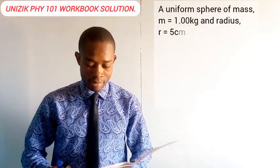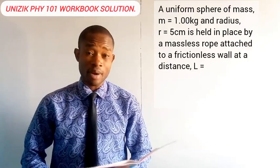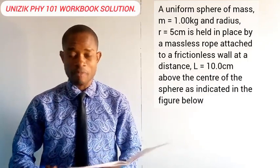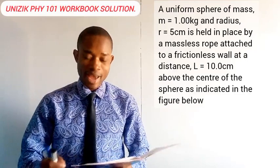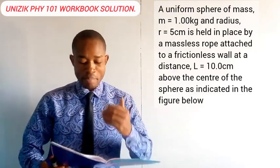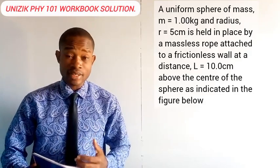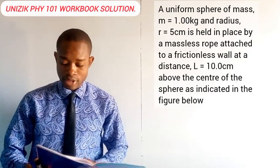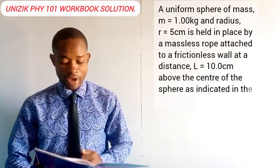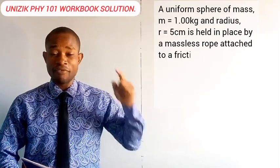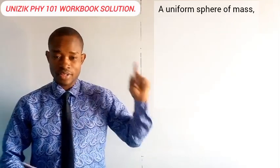Question number 3. A uniform sphere of mass m equal to 1.00 kg and radius r equal to 5.0 cm is held in place by a massless rope attached to a frictionless wall, a distance L equal to 10.0 cm above the center of the sphere as indicated in the figure below. You can see the figure.